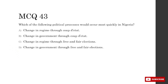Which political process would most quickly occur in Nigeria? We're looking at changes in regimes versus changes in governments, through coups or free and fair elections. A government is most likely to change compared to a regime, because a government can be changed through elections that happen every few years. So D is correct.